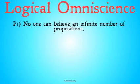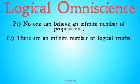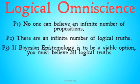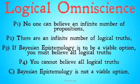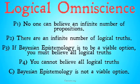A more formal argument might go as follows. Premise 1: No one can believe an infinite number of propositions. Premise 2: There are an infinite number of logical truths. Premise 3: If Bayesian epistemology is to be a viable option, you must believe all logical truths. Premise 4: You cannot believe all logical truths. Therefore, Bayesian epistemology is not a viable option. We'll take a look at why you might believe premises 1, 2, and 3, and then look at how premise 4 and the conclusion follow from those premises.